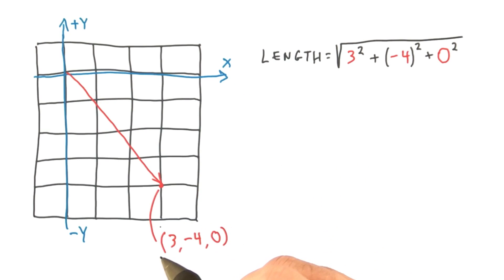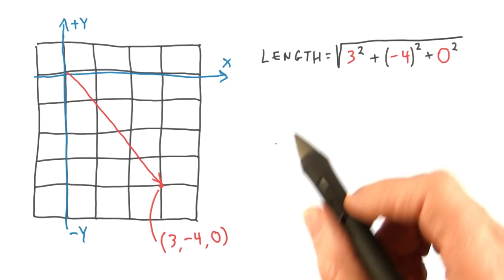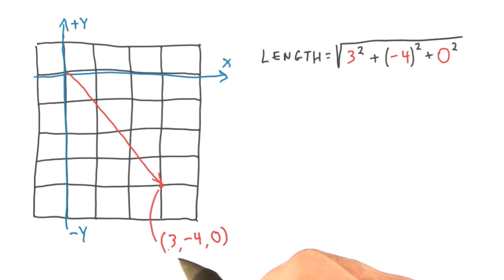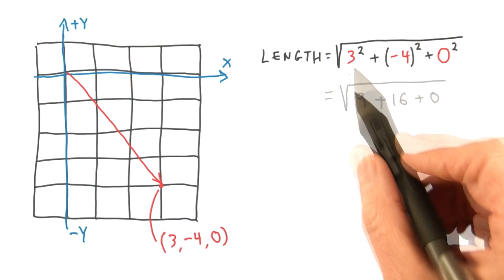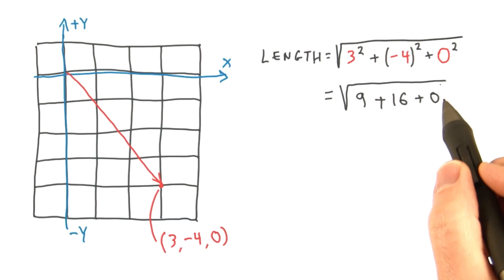For example, say I have the vector 3, negative 4, 0. To normalize it, I find the length of the vector. This is simply the Pythagorean theorem. Take each component of the vector and square it. 3 squared is 9, negative 4 squared is 16, and 0 squared is 0.